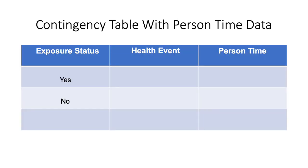Here you have a contingency table with person time data. On the left part of the contingency table is the exposure status, which indicates whether someone is exposed to a certain exposure that can increase their risk of developing a health illness or if they have a risk factor making them susceptible to disease. You also have the health event — which can be deaths, births, or disease status — and then person time, measured in days, months, or years.